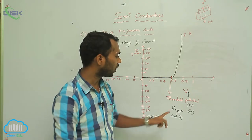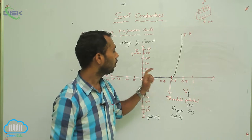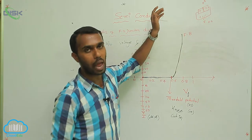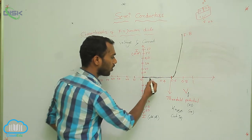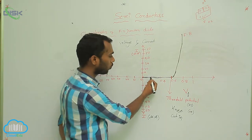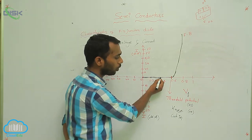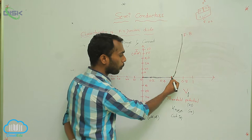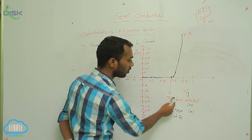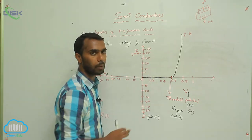What is the definition of threshold potential, knee potential, or cut-in potential? It is the potential at which current increases rapidly. If you apply 0.2V there is no current, so 0.2V is not a threshold. At 0.4V, no current. At 0.6V, yes, we have current. That is why 0.6V is called the threshold potential. That is in forward bias.